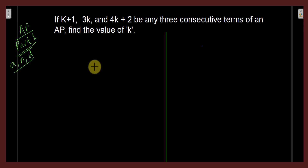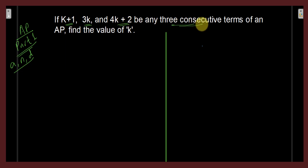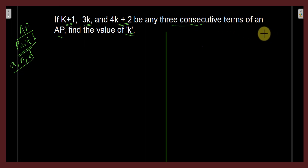Now this is Part 2 and we will see a few more questions. Here is the first question on the screen: if k+1, 3k, and 4k+2 are any three consecutive terms of an AP, then find the value of k.